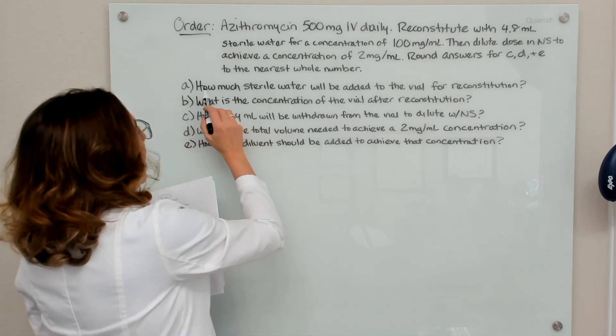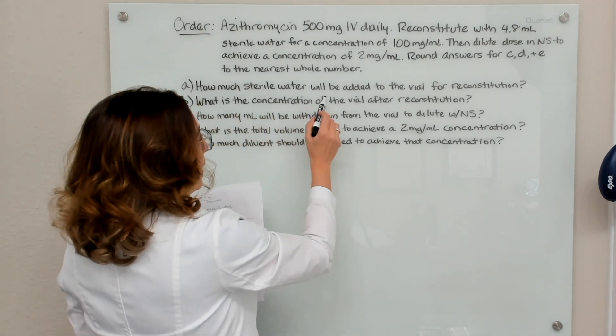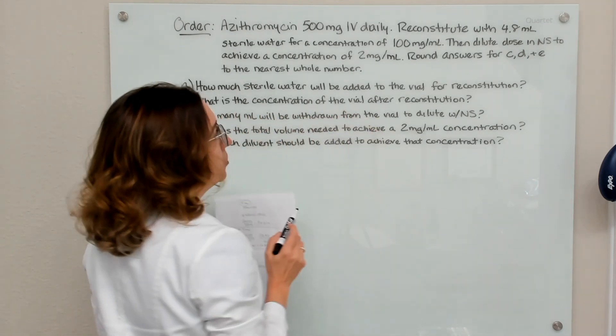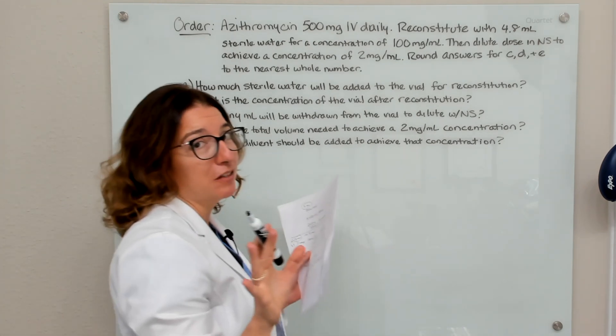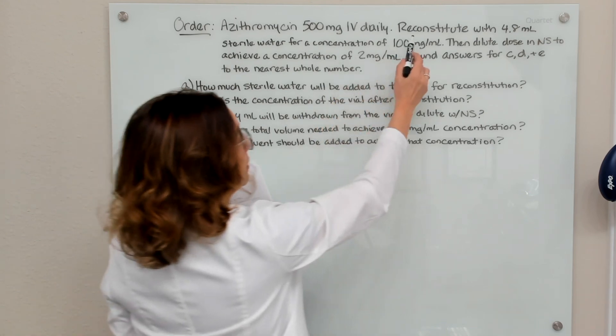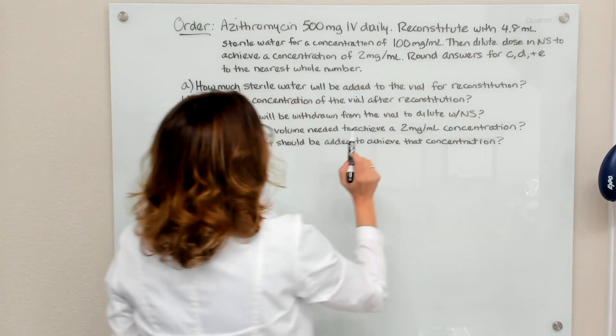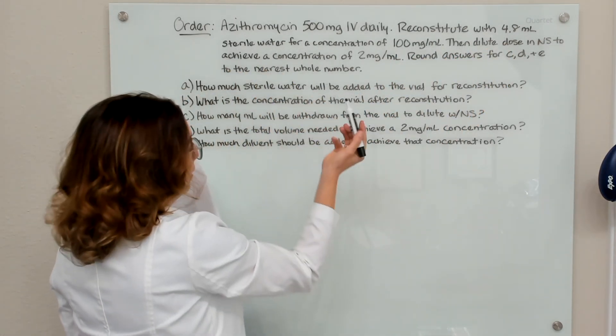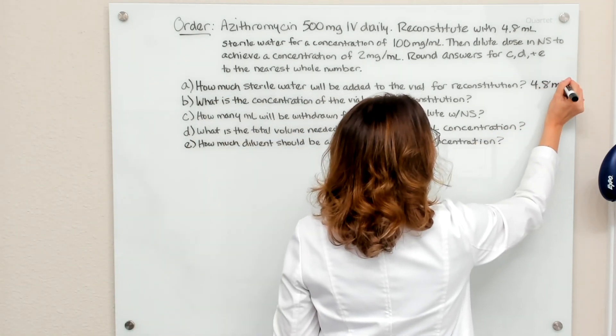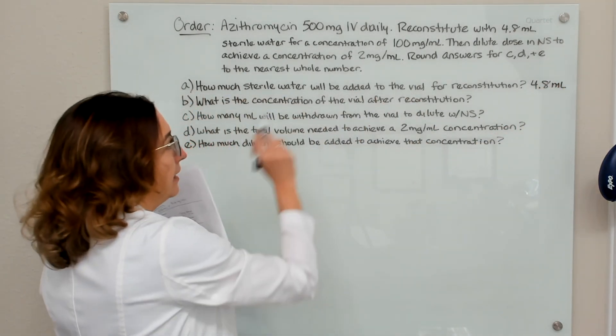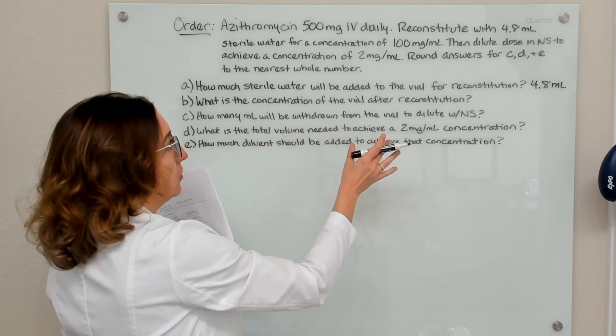So question A is, how much sterile water will be added to the vial for reconstitution? No math is required for this question, right? Because it says here, reconstitute with 4.8 milliliters of sterile water. So the answer to part A is just 4.8 milliliters. That's how much we are adding to the vial to reconstitute it.